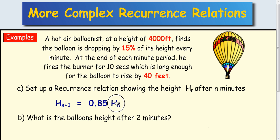So 0.85 is your multiplier H n. Then we look to add or subtract at the end of this. Now at the end the balloon is rising by 40 feet which shows it's an add. The starting value is 4000 feet, so H₀ equals 4000.